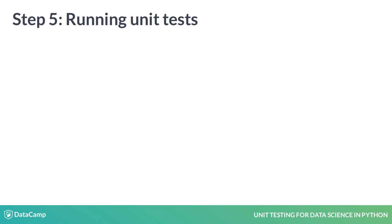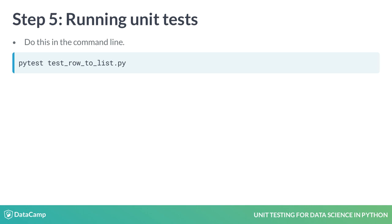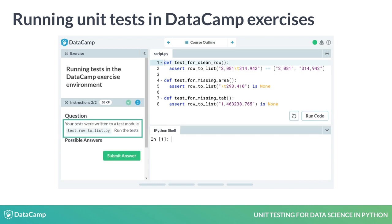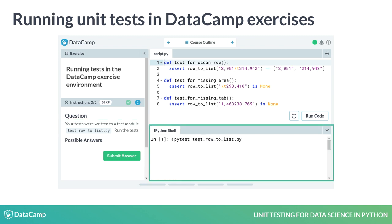To test whether RowToList is working at any time in its lifecycle, we simply run the test module. The standard way to run tests is to open a command line and type pytest followed by the test module name. In the DataCamp exercises, we can't create files directly, so you will define the unit tests in the script.py area. In the next exercise, we will write the tests to a test module in the background and tell you its file path. Once you know the test module's file path, you can run the tests in the IPython console at the bottom.